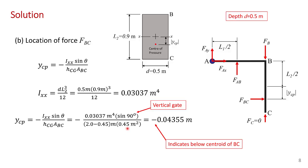And the area of this surface is 0.45 meters squared. And so when we crunch the numbers you get 0.0435 meters, where the negative sign here indicates that the center of pressure is located below the centroid of the surface.